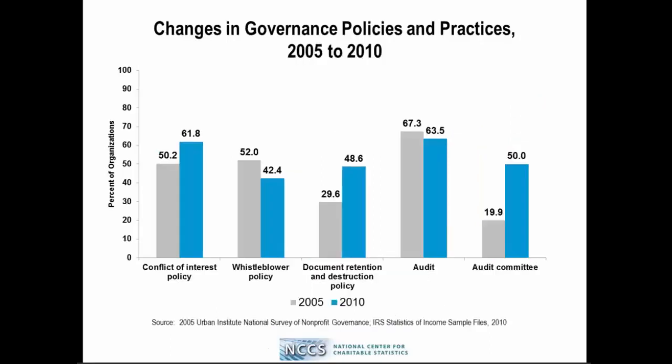How has this changed from 2005 to 2010? In general, we see positive changes for those interested in improving governance practices in the sector, with a couple of possible exceptions. The percentage of organizations with conflict of interest policies jumped about 10 percentage points from around half to 62%. Oddly enough, the percentage with whistleblower policies actually fell from 52% to 42%. Document retention and destruction policies increased quite dramatically from 30% to nearly 50%. The percentage reporting use of an audit committee or designated committee increased more than double, from 20% to nearly half.